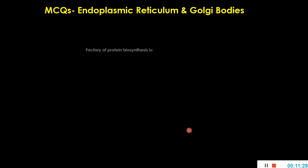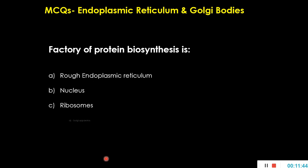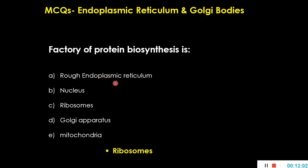The next question: the factory of protein biosynthesis is — rough endoplasmic reticulum, nucleus, ribosomes, Golgi apparatus, or mitochondria? The right answer is ribosomes. It is not the endoplasmic reticulum itself; rather, ribosomes are attached to the surface of the rough ER giving it the dotted appearance. Ribosomes are involved in protein biosynthesis.